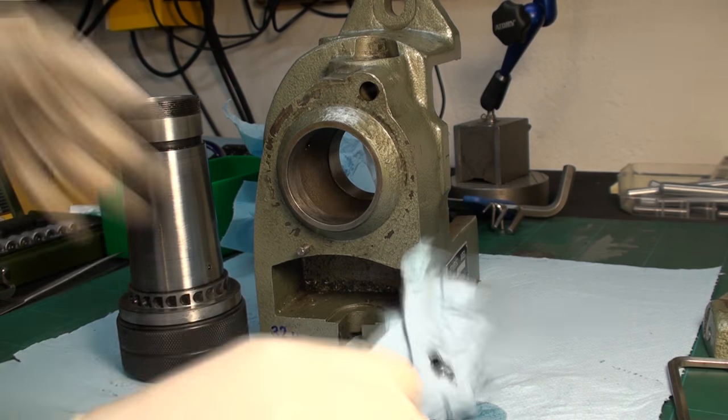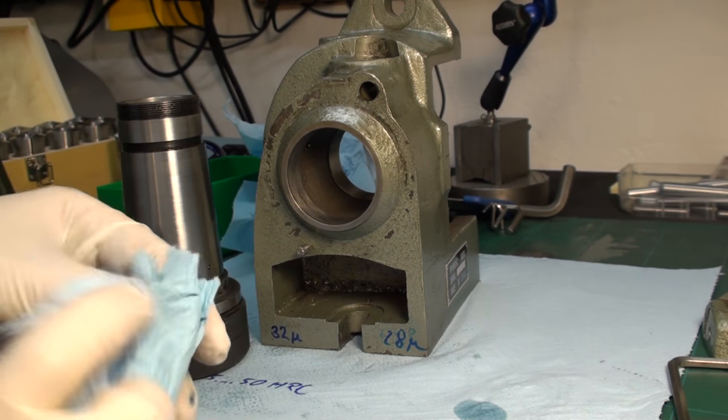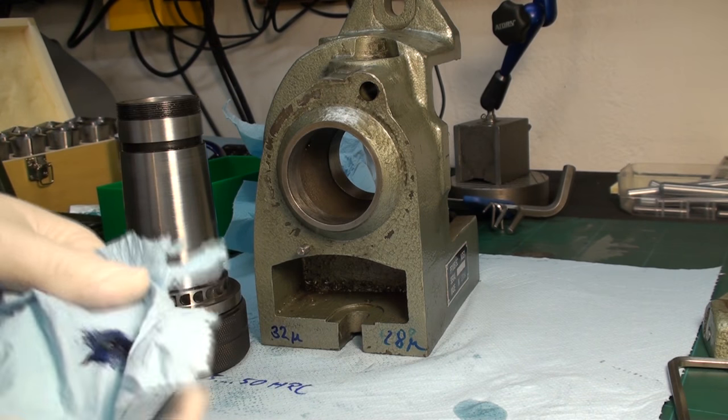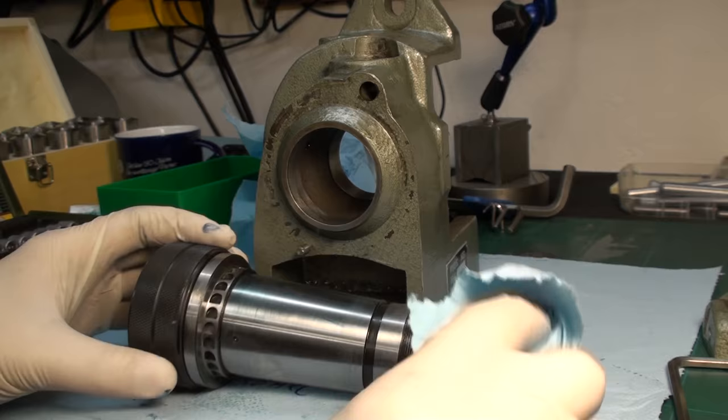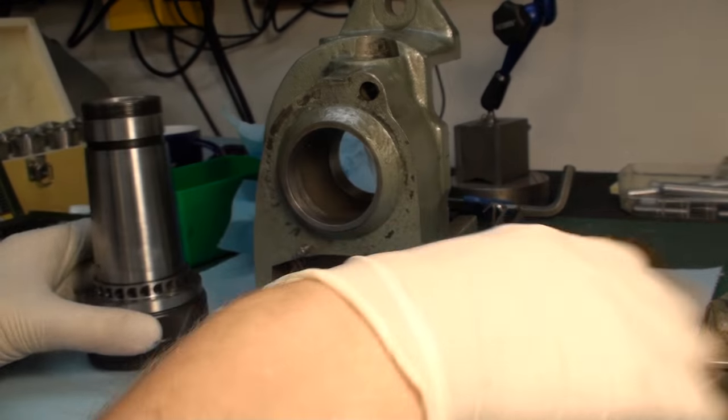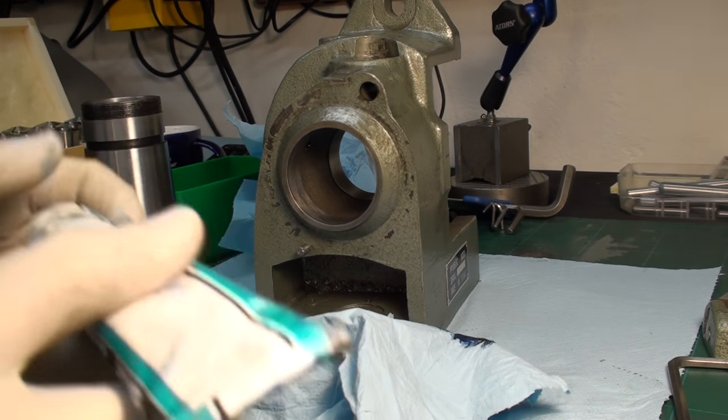I'm going to take a small piece of shop towel and an even smaller dab of high spot blue. Blueing a taper is not as easy as it sounds. I'm spreading the high spot blue. I try to get a very thin coat. Maybe I need a little bit more.